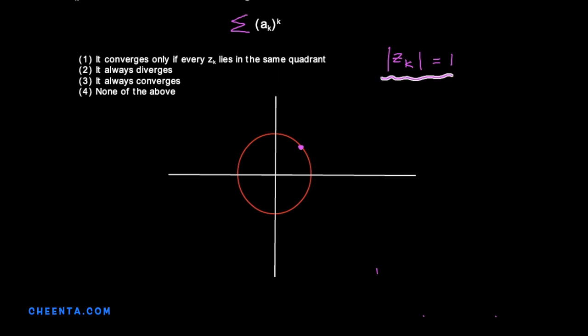Absolute value of zk means the distance of the complex number zk from the origin is 1. So that means we are only focusing on points which are one unit away from the origin of the complex plane which is 0,0. So zk could be any point from this unit circle.